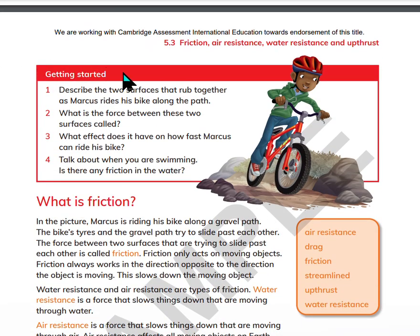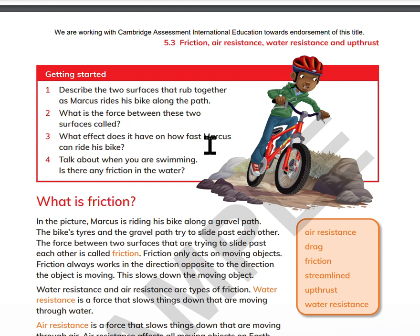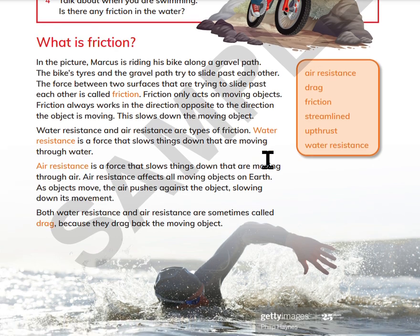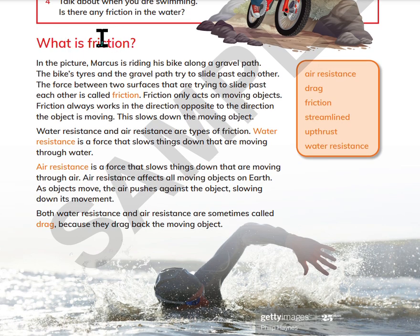Let's get started. Describe the two surfaces that rub together as Marcus rides his bike along the path. What is the force between these two surfaces called? What effect does it have on how fast Marcus can ride his bike? Talk about when you are swimming — is there any friction in the water? What is friction?